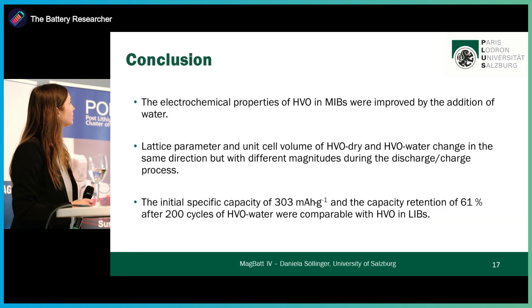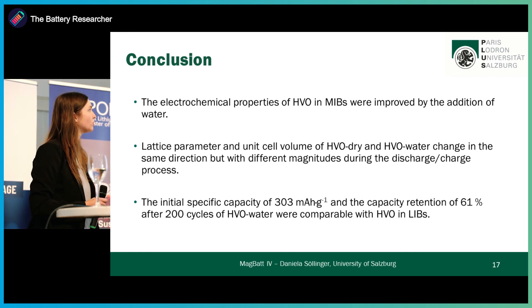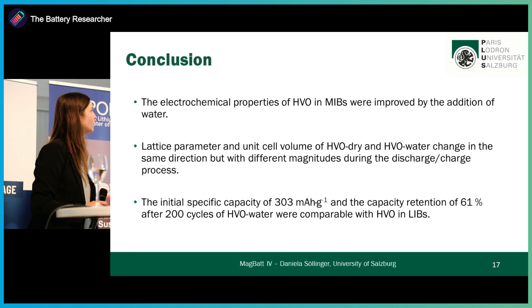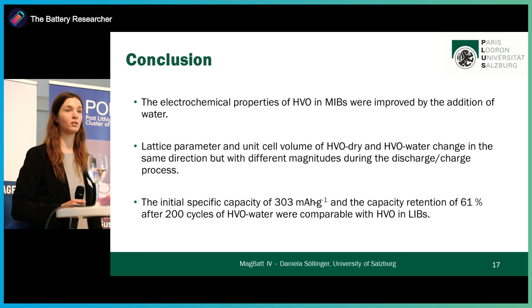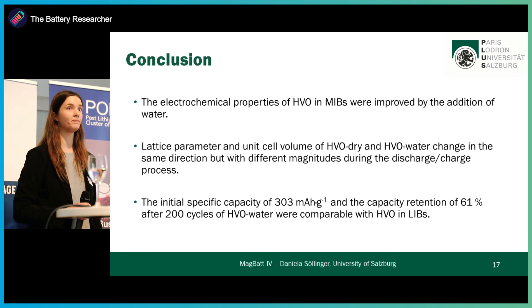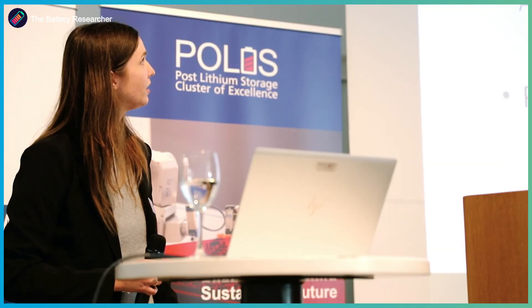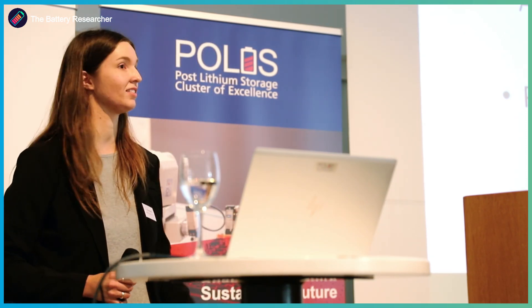To conclude: we showed that the electrochemical properties of hydrated vanadium oxide in a magnesium-ion battery were improved by the addition of water; that the lattice parameters and unit cell volume of HVO dry and HVO water change in the same direction but with different magnitudes during charge and discharge; and that the initial specific capacity of around 300 mAh/g and the capacity retention of approximately 60% after 200 cycles of HVO water are comparable with hydrated vanadium oxide without any modifications in a lithium-ion battery. With this, I am at the end of my presentation, and I would like to thank the whole working group at my university. Thank you for your attention, and I am happy to answer any questions.